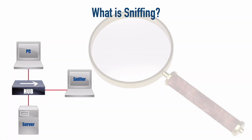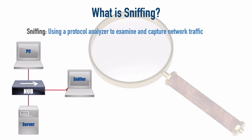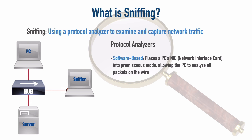We want to define sniffing and identify a couple of variants you need to know for the CEH exam. Sniffing uses a device called a protocol analyzer, which could be as simple as a laptop running software — some device that can capture packets appearing on the network. Software-based protocol analyzers use a PC or laptop whose network interface card is placed into promiscuous mode, meaning that NIC can accept traffic destined for different MAC addresses than its own.